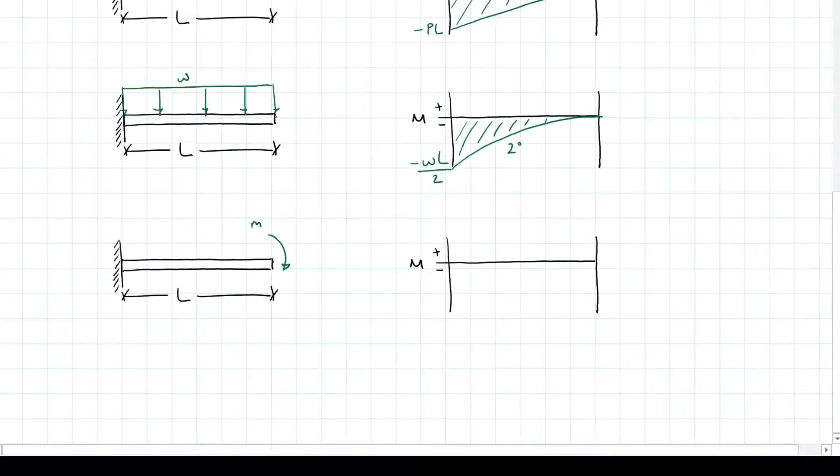What about an applied moment? The moment diagram, because that moment is causing compression in the bottom, will be a flat moment diagram with magnitude negative M.